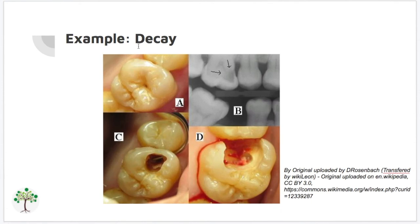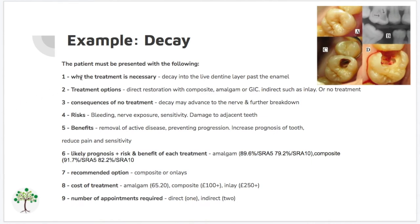An easy example here is some tooth decay identified during an exam appointment with your patient. You present to them the fact that you've found decay on their tooth — perhaps show it on the radiograph — and present the options. Why the treatment is necessary: the decay is into the live dentine layer, past the enamel layer. The treatment options would be either direct restorations — composite, amalgam, or GIC — or something indirect such as an inlay, or even no treatment, which is always an option.